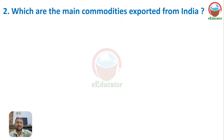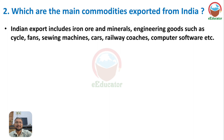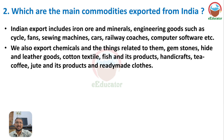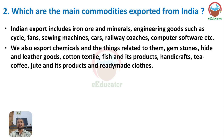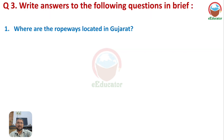Question: Which are the main commodities exported from India? India exports iron ore, minerals, engineering goods such as cycles, fans, sewing machines, cars, railway coaches and computer software. We also export chemicals, gemstones, hide and leather goods, cotton textiles, fish and its products, handicrafts, tea, coffee, jute and its products, and ready-made clothes.